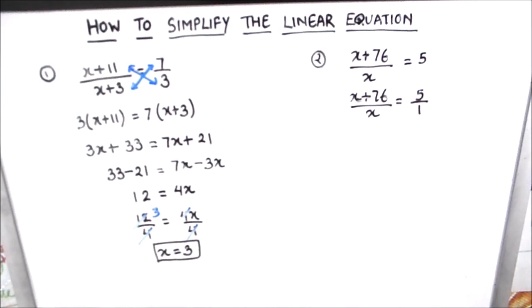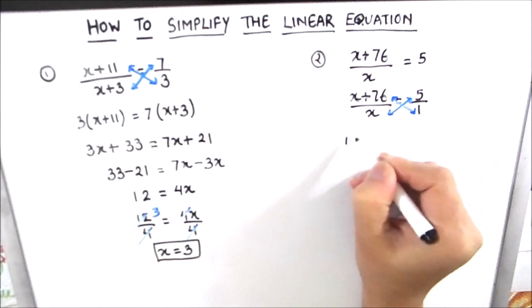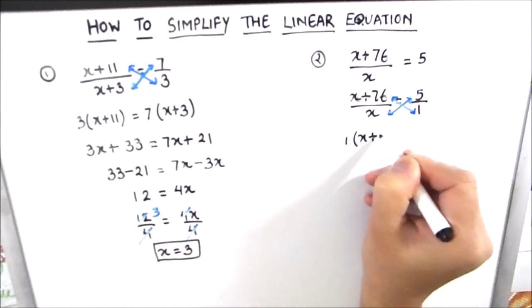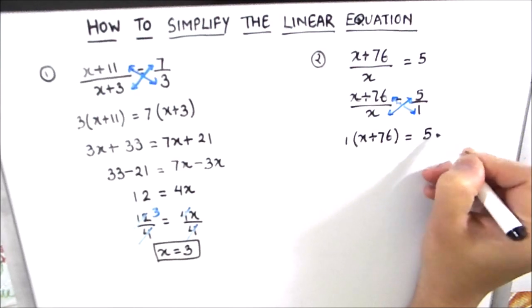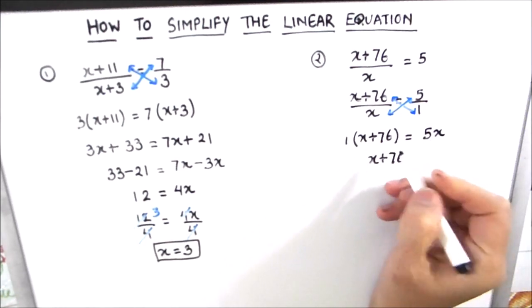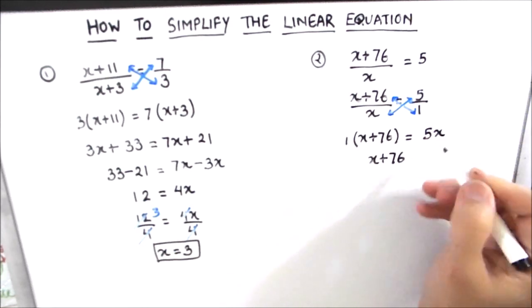So we will cross multiply. This is 1 times (x+76) is equal to 5 times x. So we will distribute, so 1 times x is x and 1 times 76 is 76 is equal to 5x.